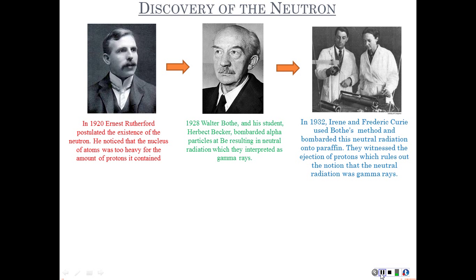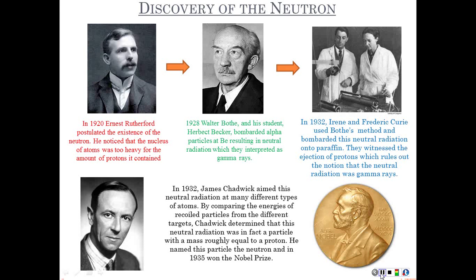In 1932, Irene and Frédéric Curie used that method to bombard paraffin wax with this neutral radiation and found that it would release protons, which was inconsistent with gamma rays. Through momentum and energy conservation analysis, you could prove that gamma rays do not have enough energy to release protons from paraffin wax. The same year, James Chadwick aimed the neutral radiation at different atoms — nitrogen, carbon, helium, and argon — and by comparing the energies of recoiled particles from different targets, he determined this neutral radiation was actually a particle with mass close to that of the proton. This was the discovery of the neutron, and just three years later he won the Nobel Prize.